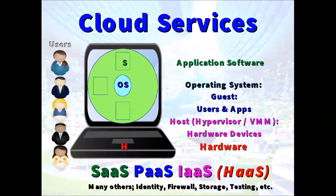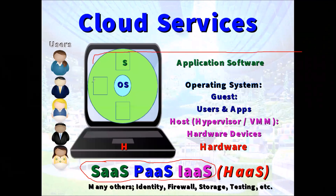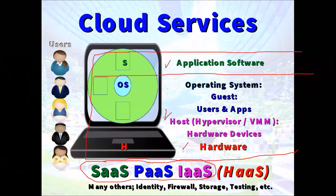So Spock explains to Captain Kirk how these most common models work. Software as a service is when the provider provides everything in the computing infrastructure — all hardware, all operating systems, all applications. 'Well, then that can't work, Spock.' 'Correct, Captain.' 'What about platform as a service?' 'Well, that's when the provider provides all of the hardware, all of the operating systems, and the customer gets to load in their applications.' 'So it wouldn't be either of these.' 'Correct, correct.'